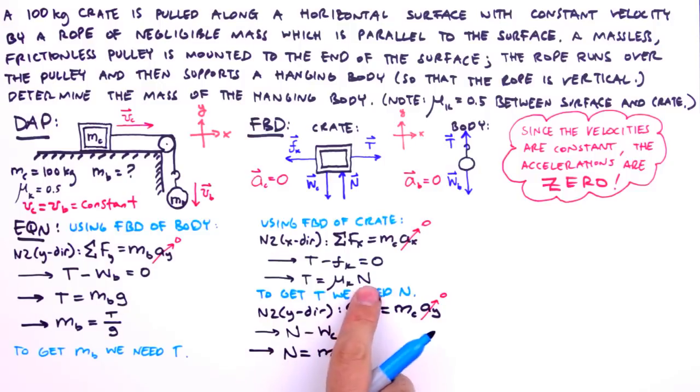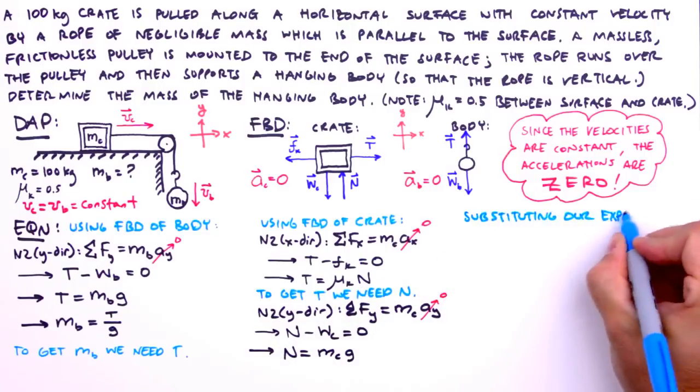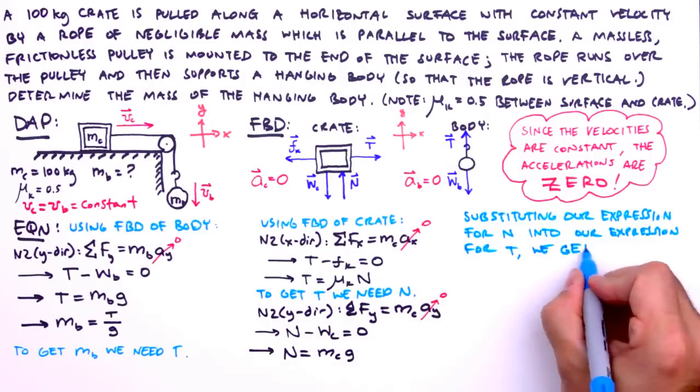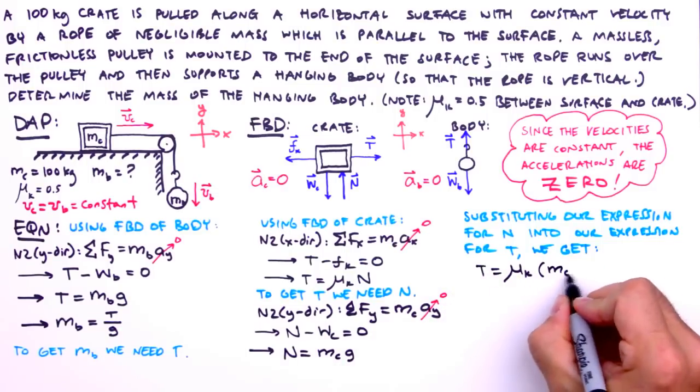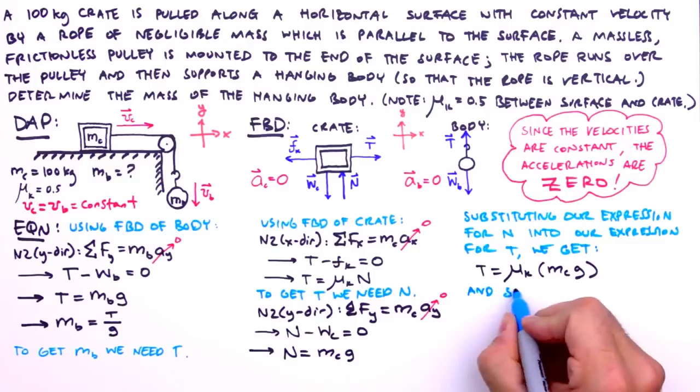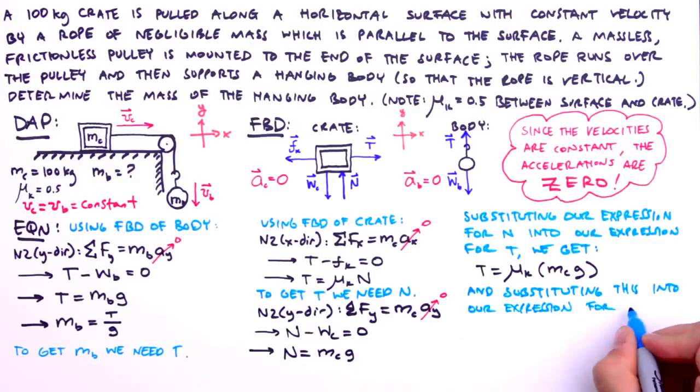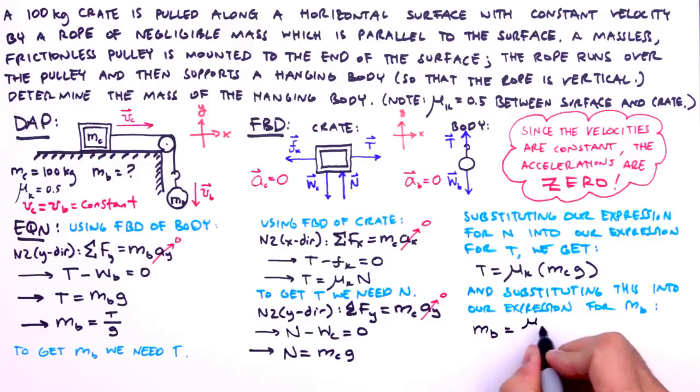Time to hopscotch our way back to m sub b. Substituting our expression for n into our expression for t, we get t equals mu sub k times m sub c times g. And substituting this expression into our expression for m sub b, we get m sub b equals mu sub k times m sub c times g divided by g. The g's divide out and we're left with an elegantly simple solution.